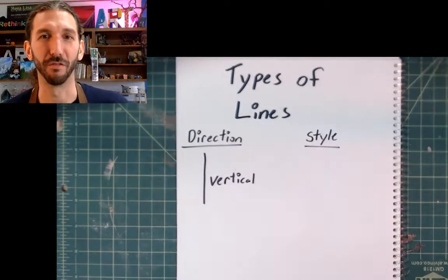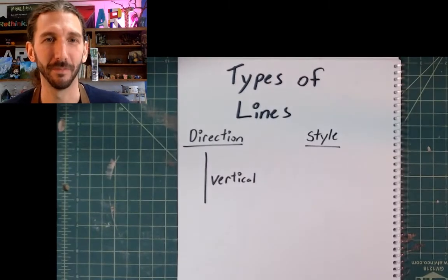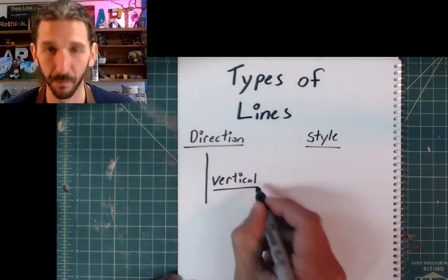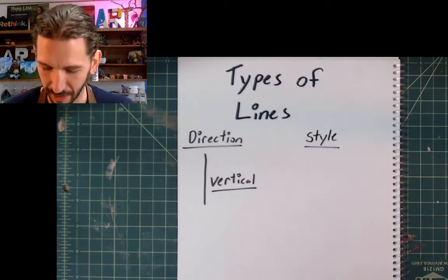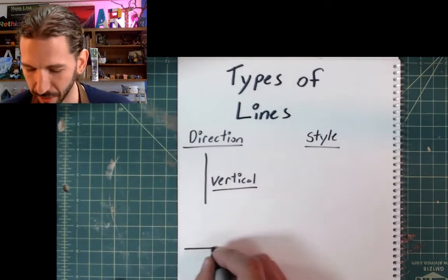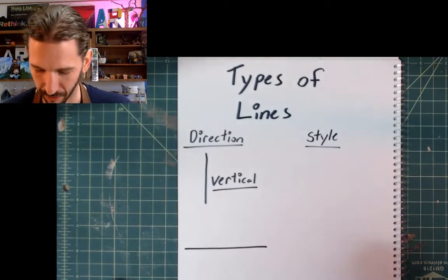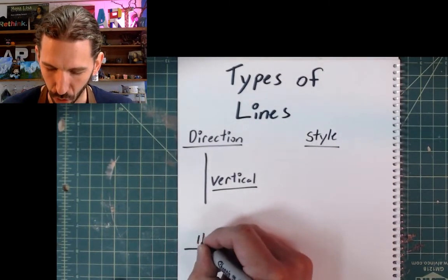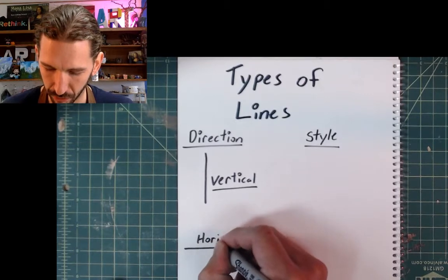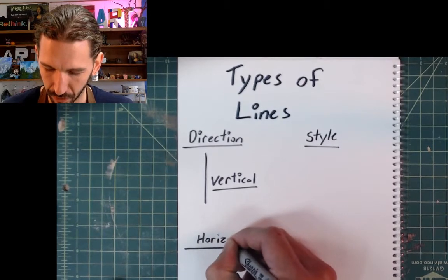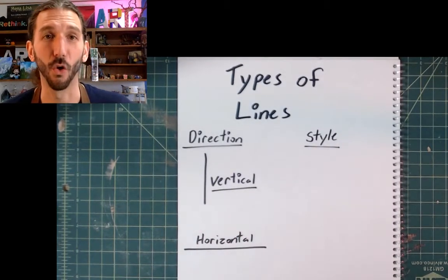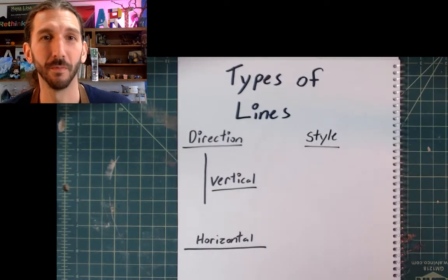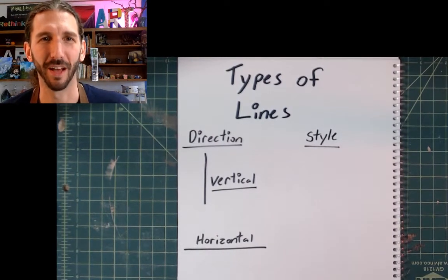Can all of you say vertical? Another kind of line is a line that goes left and right. We call that horizontal. Can all of you say horizontal? Horizontal. Good.